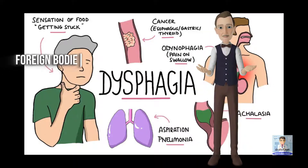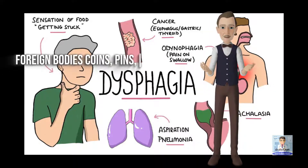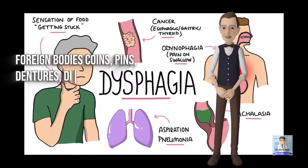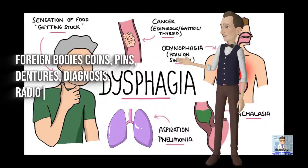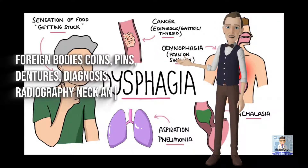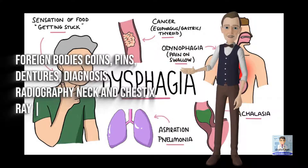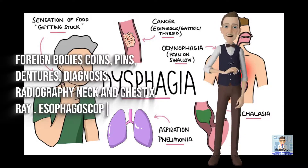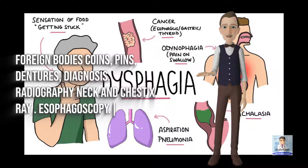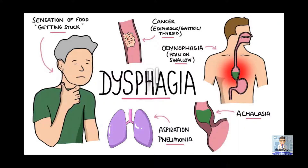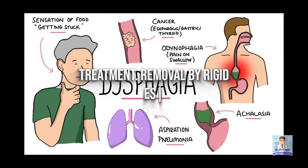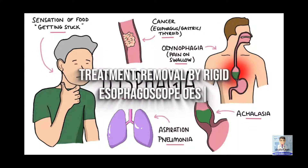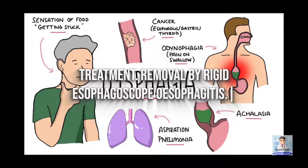Foreign bodies such as coins, pins, and dentures. Diagnosis: radiography with neck and chest X-ray, and esophagoscopy. Treatment: removal by rigid esophagoscope.